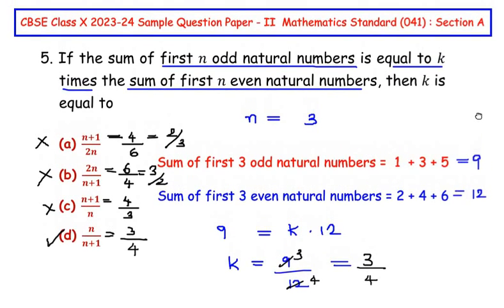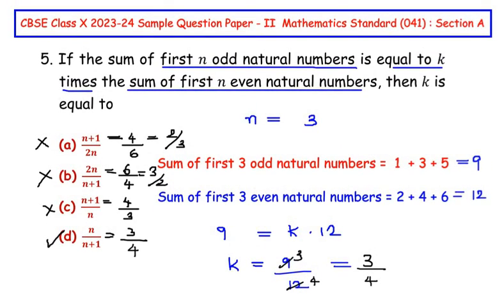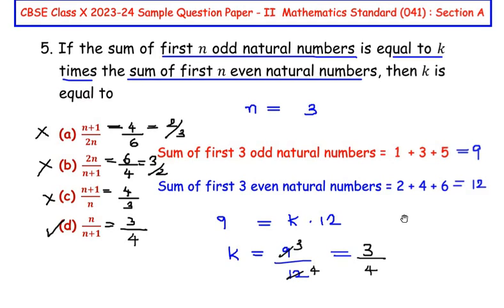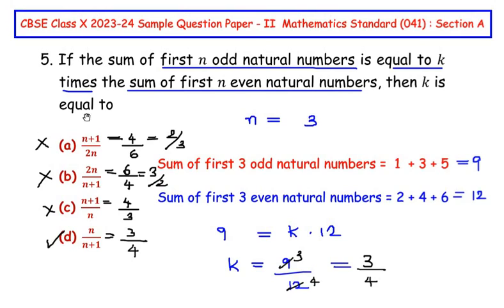You can take any number of odd natural numbers - 1, 2, 3, 4 and so on - and use this method to find the answer. I hope you have understood all the steps and liked the video. If you know any other way of solving this, do comment below. Like, share, and subscribe to my channel. Thank you for watching.